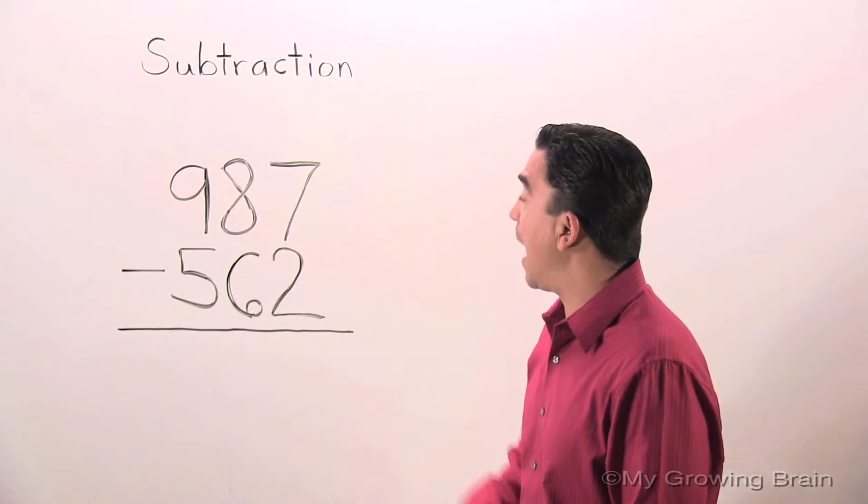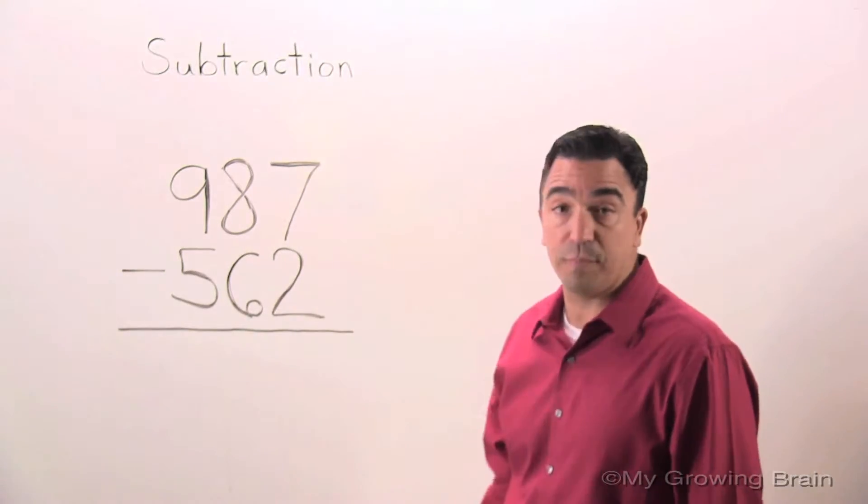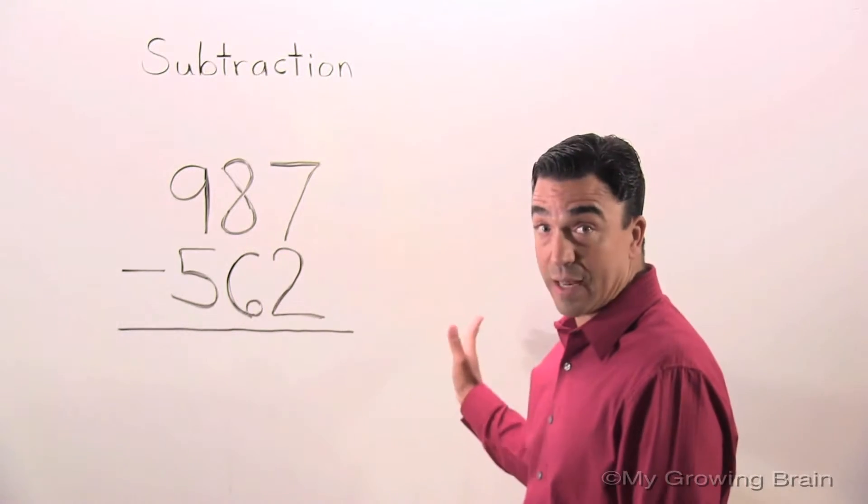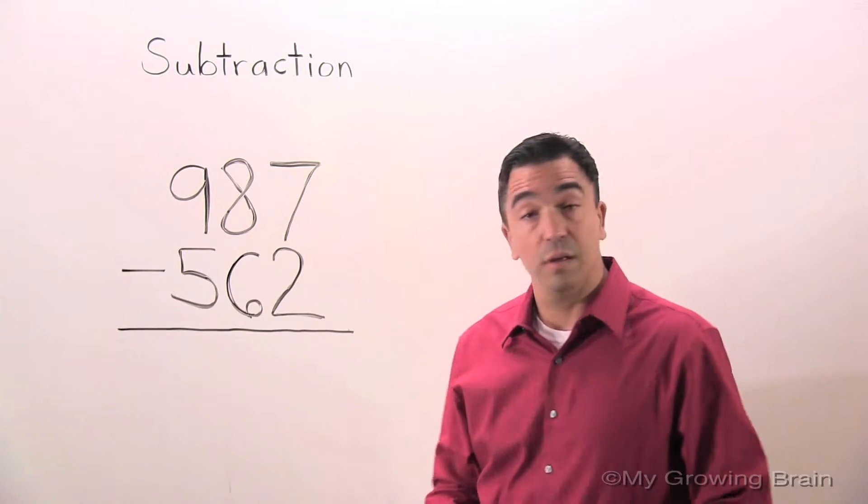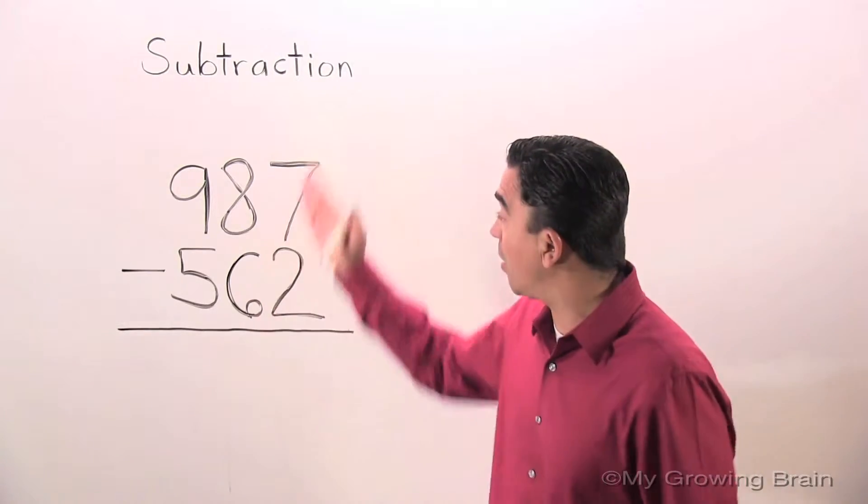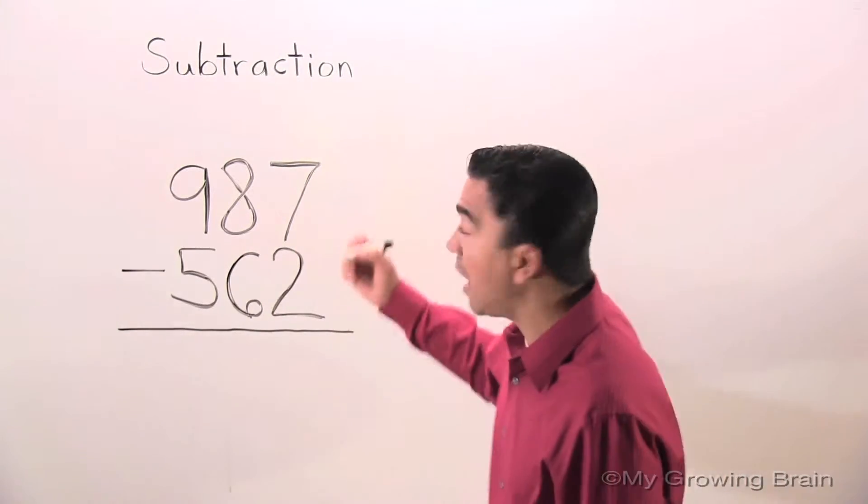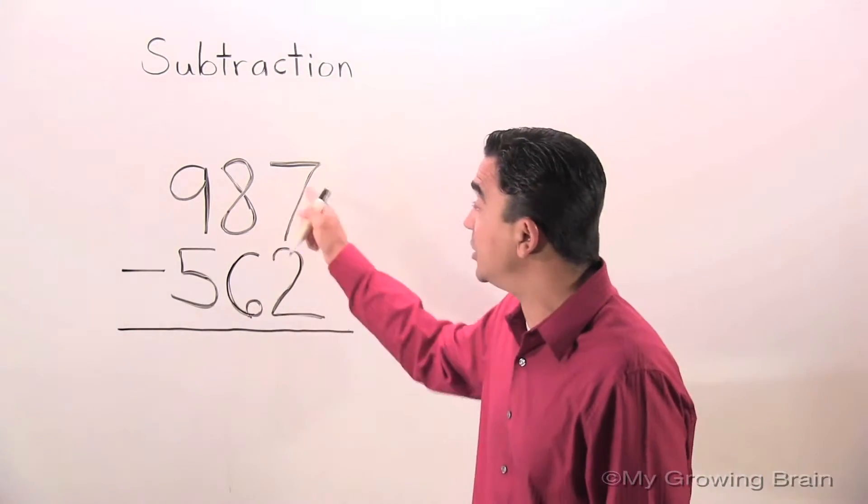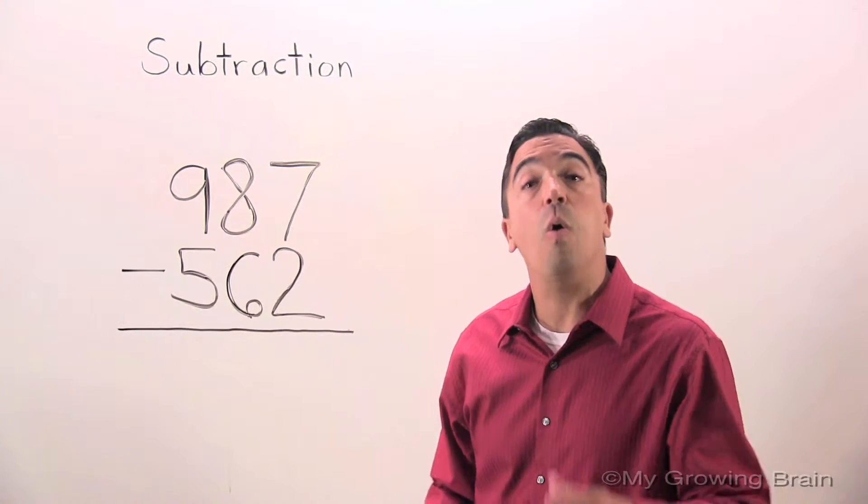When I do a subtraction problem, I always start in the ones place, to the far right. Let's organize our workspace first. I'm going to draw a line between each digit to keep it organized.